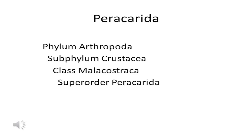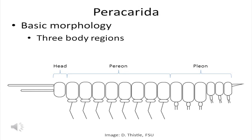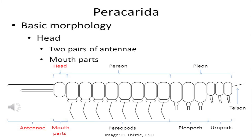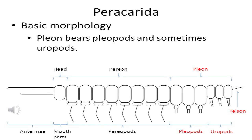The next group I want to take up is the peracarida. Peracarids belong to the crustacea and have their own superorder. Three orders of peracarida are remarkably important in the deep sea. The peracarids have three body regions: a head, a middle section called the pereon, and a back section called the pleon. The head bears two pairs of antennae and mouthparts. The pereon bears pereopods. The pleon bears pleopods, uropods, and in some orders a telson.